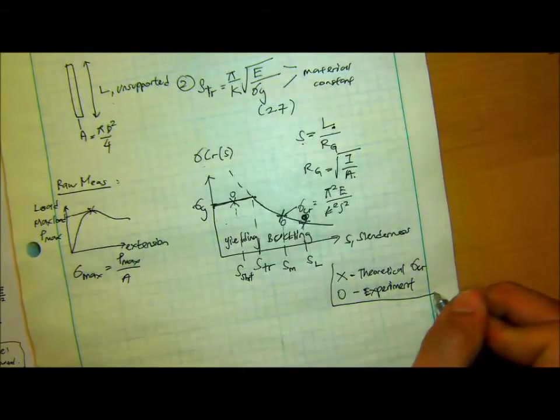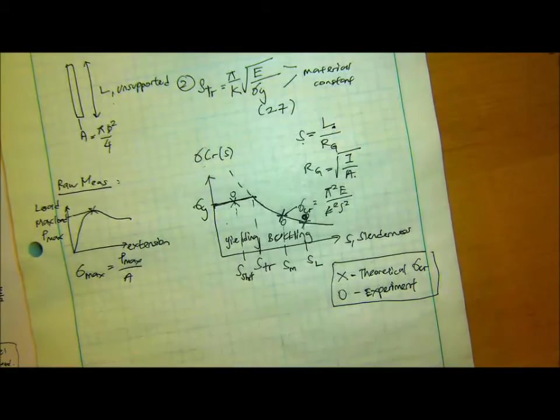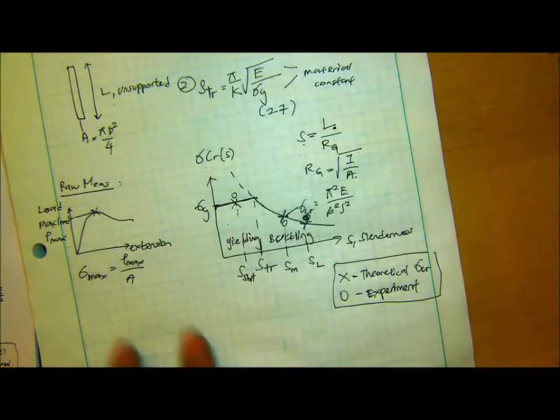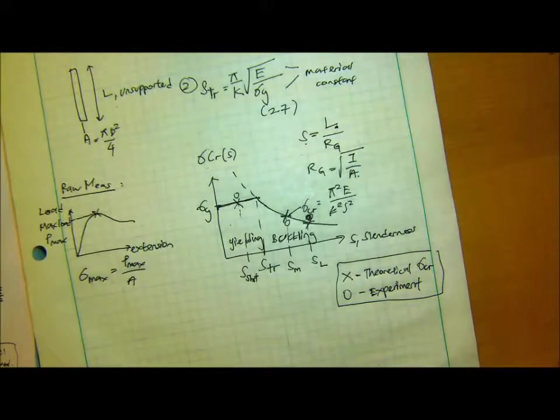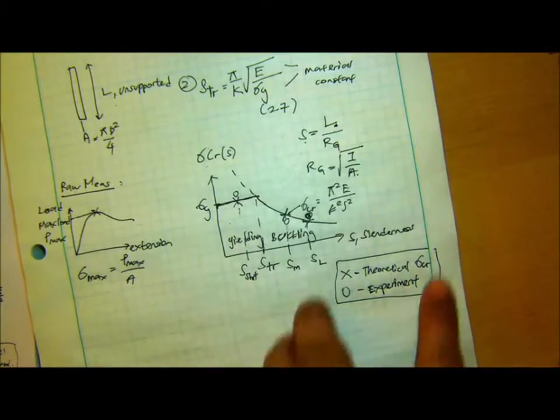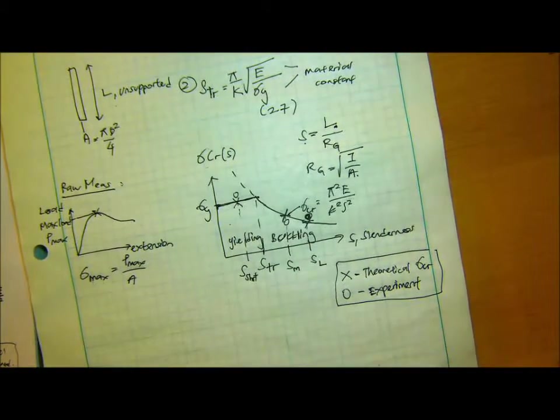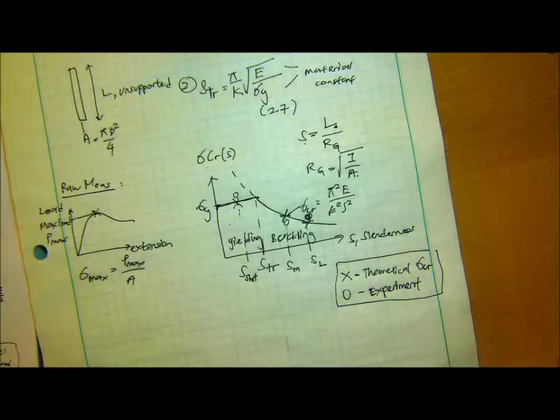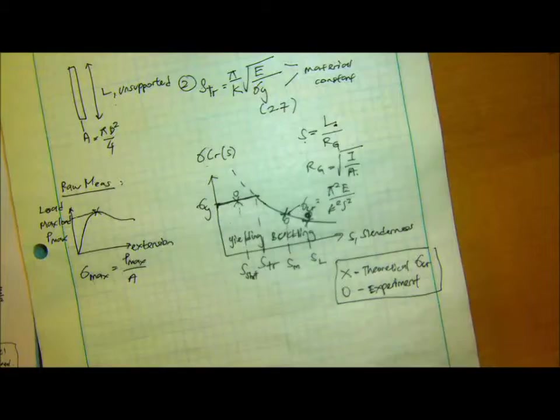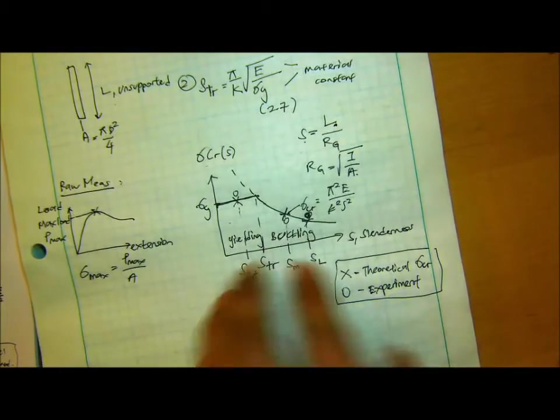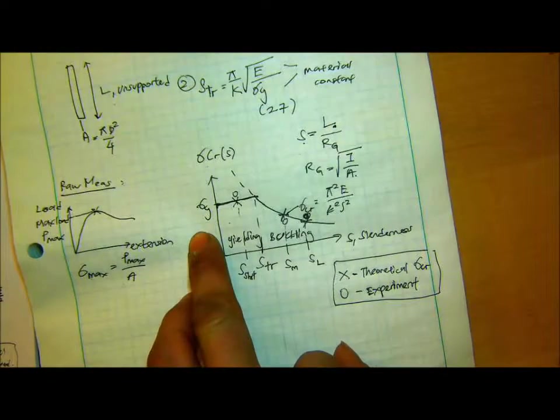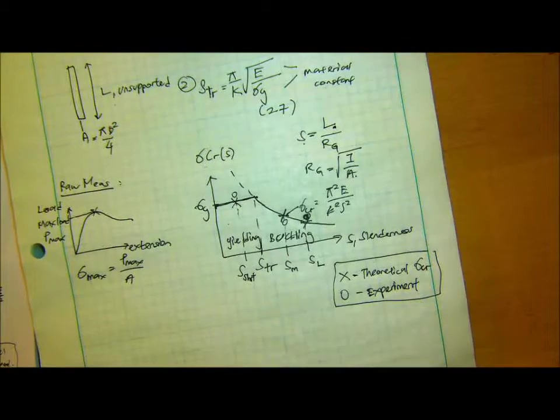So this is what should be done in the lab report. Do the plot. I think this is a very simple way to tell yourself, and convince yourself, and also the reader, immediately you know that is it going to buckle? Is it theoretically predicted to buckle or yield? So this is the quickest way to get the whole picture.